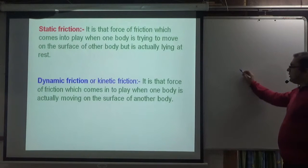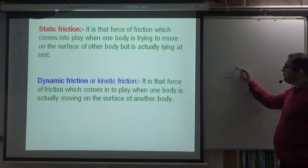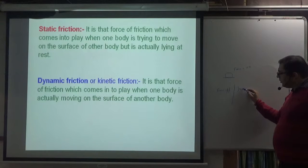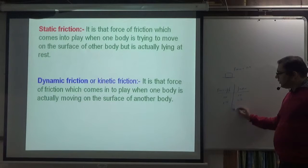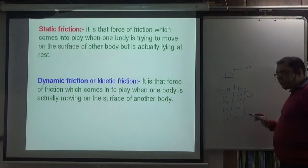For example, if you apply force to move a block with weight 10 N, I have made a table. If I applied 1 N then the force of friction is 1 N, if I applied 2 N it is 2 N, if I applied 8 N it is 8 N, and if I applied 10 N the body remains at rest. This friction is known as static friction.